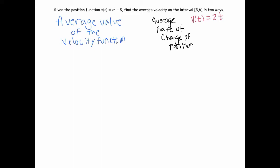So those are two ways to find the average velocity, and we can set them equal to each other. Now let's write the mathematical expressions. The average value of the velocity function on the interval three to six — by the definition of average value — is one over (6 minus 3) times the integral from 3 to 6 of the velocity function, which is 2t.